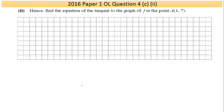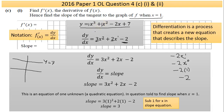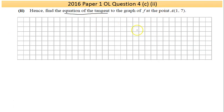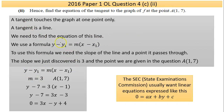Part C(ii) says: hence find the equation of the tangent to the graph of f at the point (1, 7). A tangent is a straight line, and for a straight line you need to know the slope and one point on that line. We know the slope is 3 and the point is (1, 7). I use the equation of a line formula from the maths tables, with x₁ = 1, y₁ = 7, and m = 3.